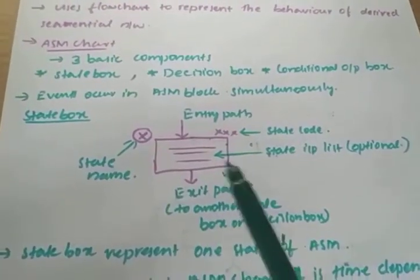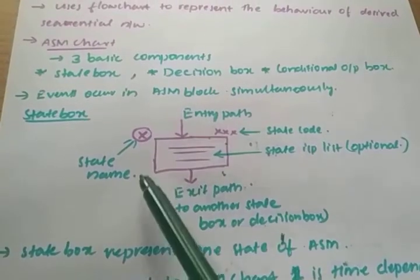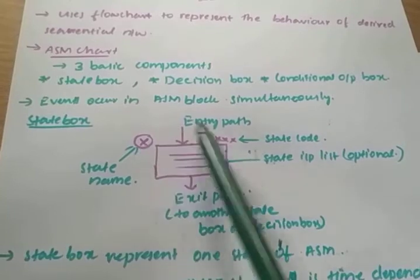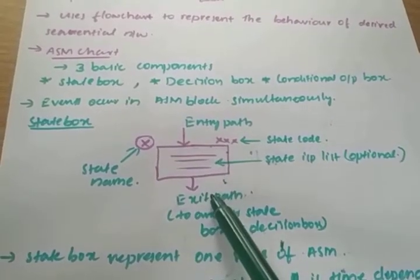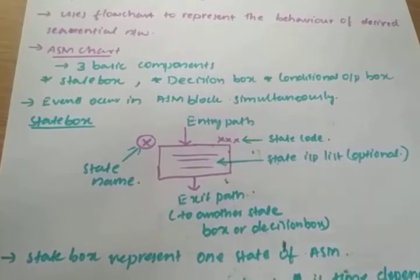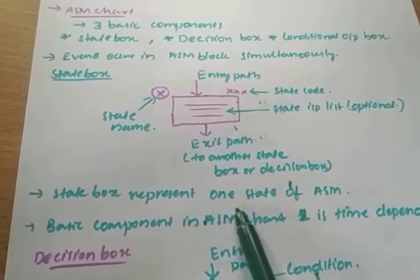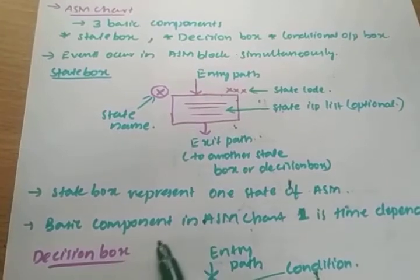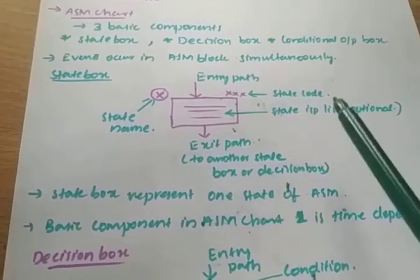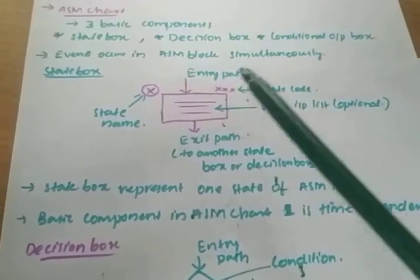The first basic unit is the state box, represented by a rectangle. On the left side you represent the state name within a circle. There is an entry point and an exit point, and the state output is represented within this box. A state box represents one state of an ASM.